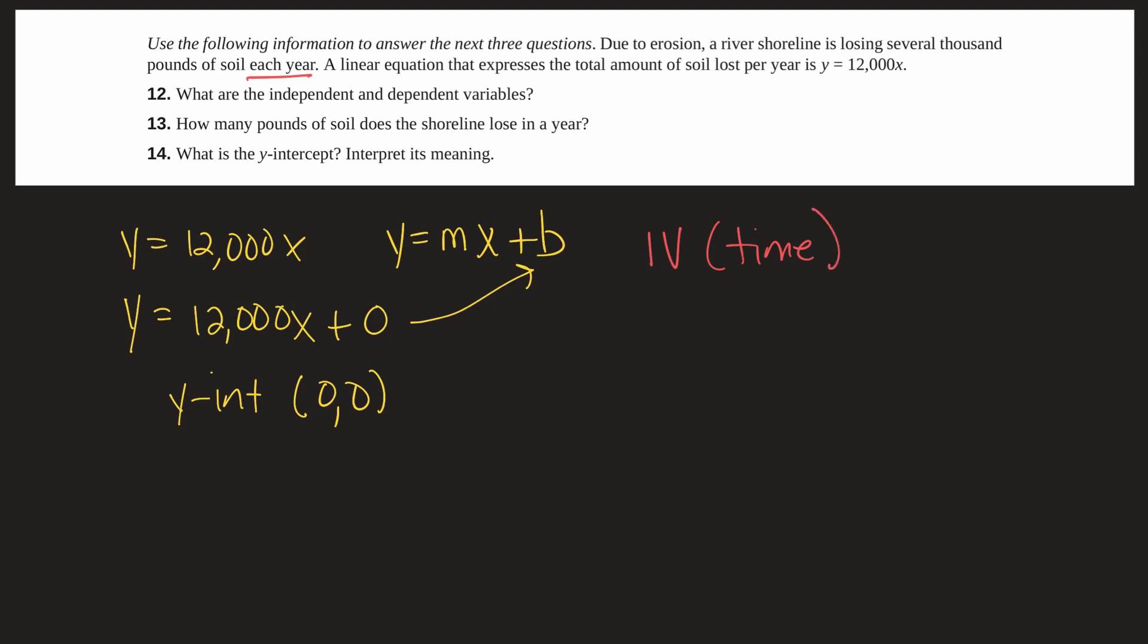For one year we would lose 12,000 pounds of soil. For two years we would lose 24,000 pounds of soil. So on and so forth. So our independent variable is time.